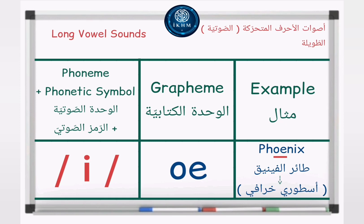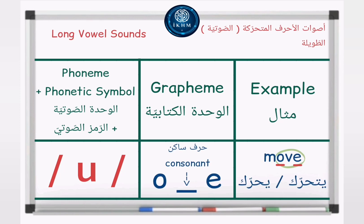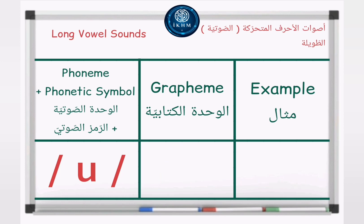Grapheme — letters OE, example: 'phoenix' /iː/. Phoneme plus phonetic symbol: /uː/. Grapheme — letter O, example: 'do' /uː/. Grapheme — O consonant E, example: 'move' /uː/. Grapheme — letters OE, example: 'shoe' /uː/.